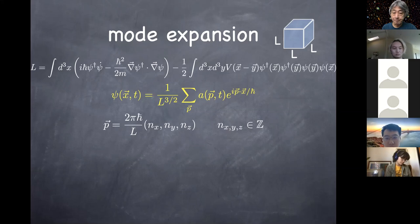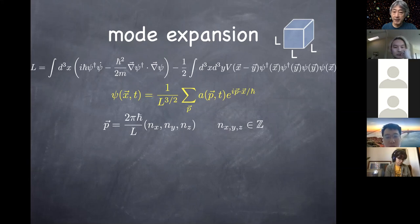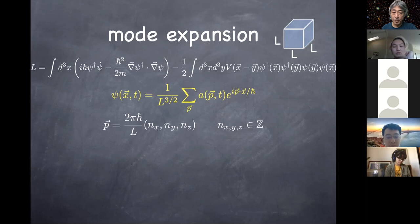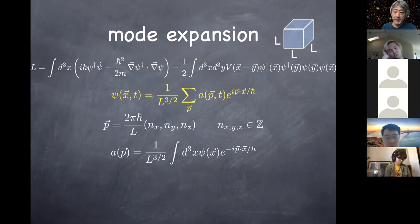As long as the n's are integers, once x changes by L in either the x, y, or z direction, the plane wave factor is periodic due to this normalization of 2π ħ over L. When you expand psi in terms of these wave vectors, you need to satisfy this quantization condition, so the sum over momenta becomes a discrete sum. The factor of 1 over L to the three-halves is introduced for normalization purposes.